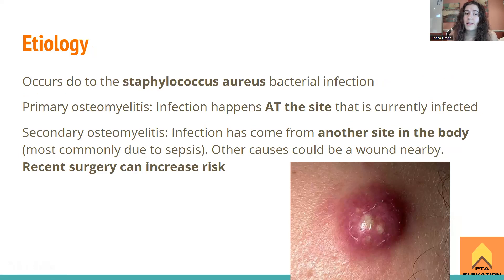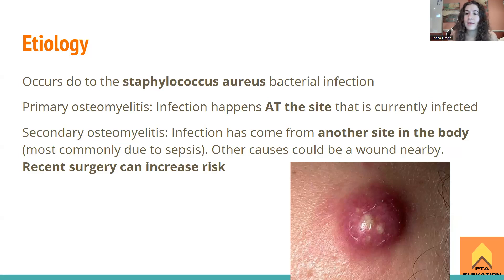Osteomyelitis is caused by a Staphylococcus aureus bacterial infection — so this is a type of staph infection. Primary osteomyelitis means nothing else is causing it; it's appearing on its own. The infection of the staph bacteria happens directly at the infected site. For example, if the bacteria went straight to your spine and that's the only thing infected — that would be primary osteomyelitis.